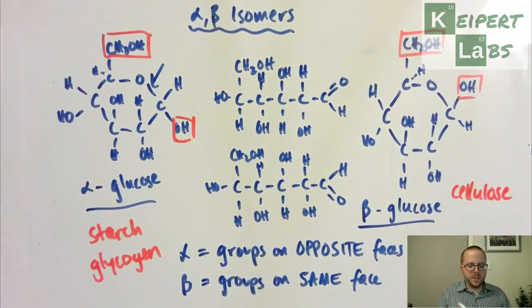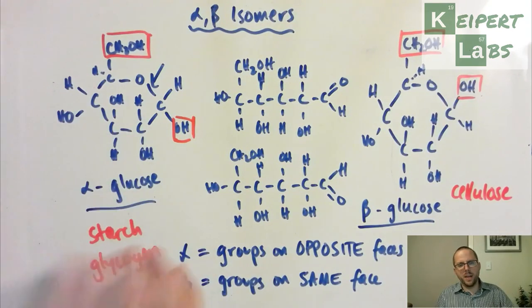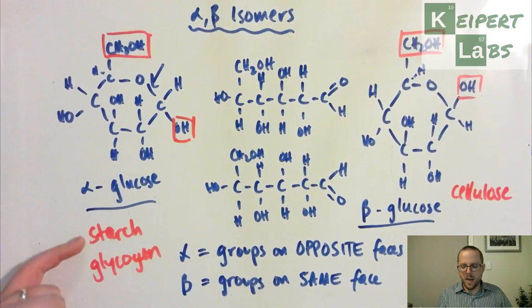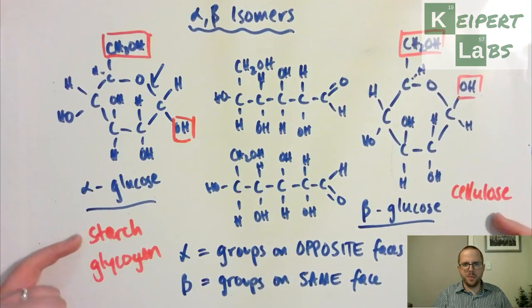Whereas beta glucose over here is used in cellulose. And so what that does, and we'll look at this a little bit further, is that then the way that this is put together and how they connect together means that starch and cellulose, for example, which are both plant-based sugars, have very different patterns.